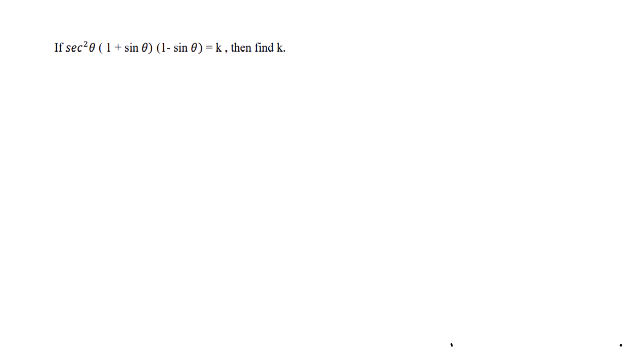The next question: if sec²θ · (1 + sinθ)(1 - sinθ) = k, find the value of k. We should simplify the left-hand side. Take sec²θ · (1 + sinθ)(1 - sinθ). We can apply the identity (a + b)(a - b) = a² - b², giving us 1² - sin²θ.